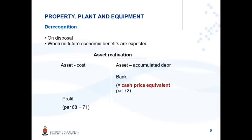The carrying amount is then compared against a bank entry representing net proceeds to give you either a profit or loss. The bank entry — the proceeds that you compare against the carrying amount of the asset — must represent the cash price equivalent of the proceeds. It cannot include interest; please refer to the discussion on deferred settlement terms that we have discussed before.